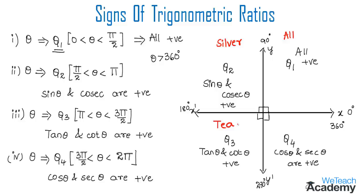In quadrant 3, we have 'Tea', starting with T — the trigonometric ratio starting with T is tan, so tan and its reciprocal cot are positive, and the rest are negative. In quadrant 4, we get 'Cups', starting with C — cos and its reciprocal secant are positive, and all other ratios are negative.